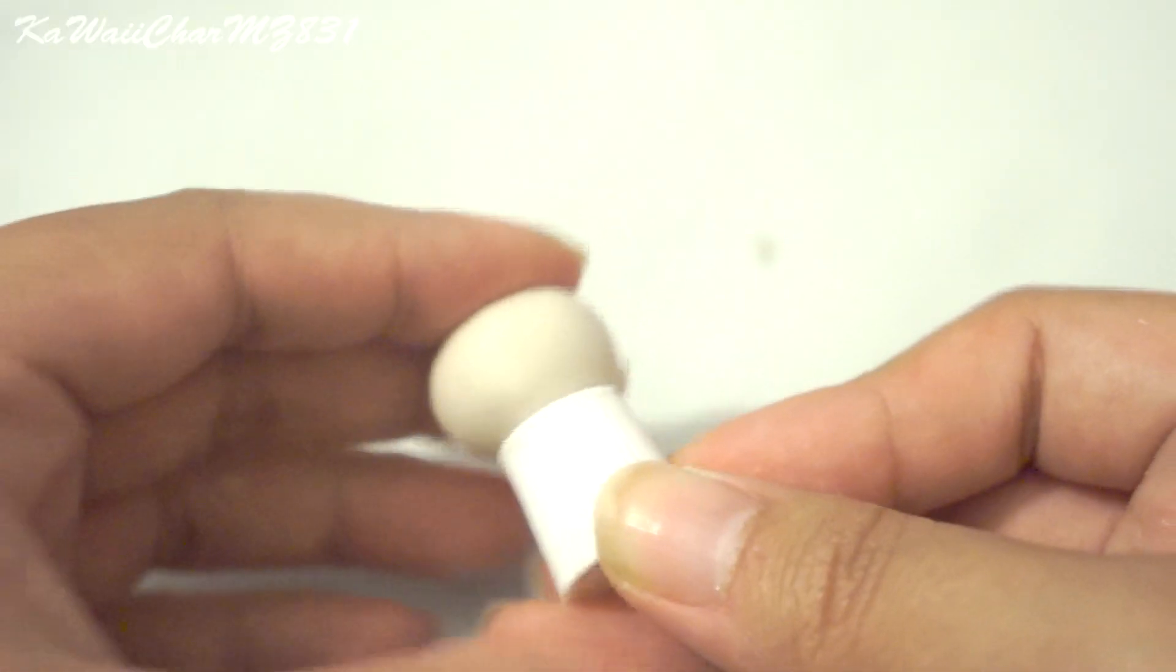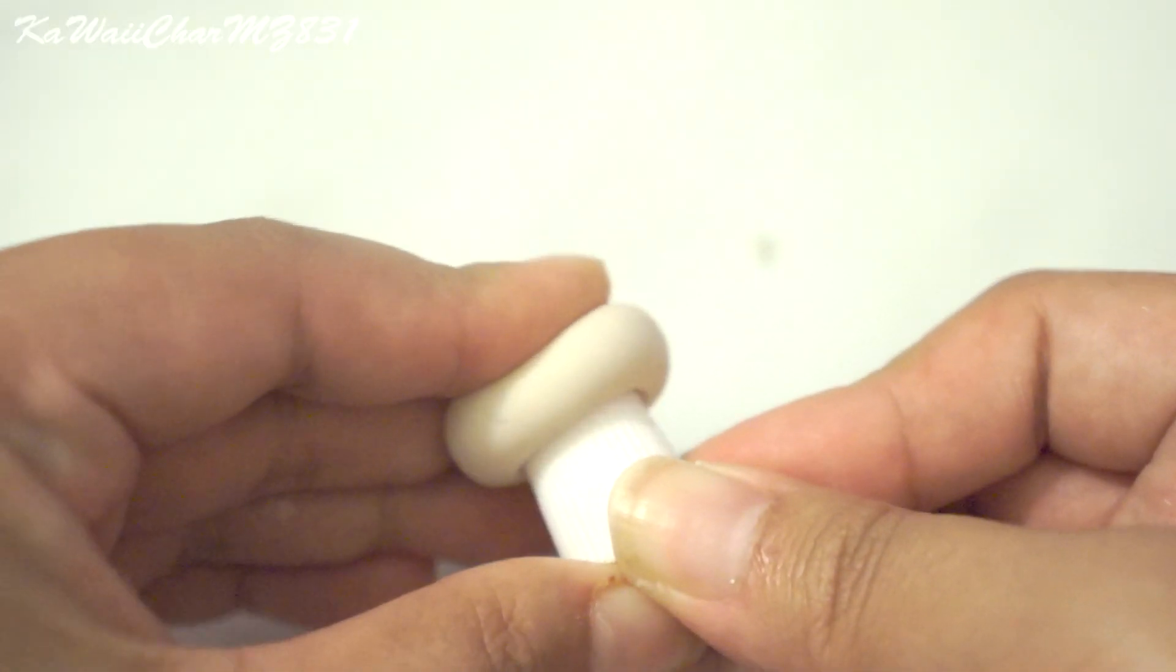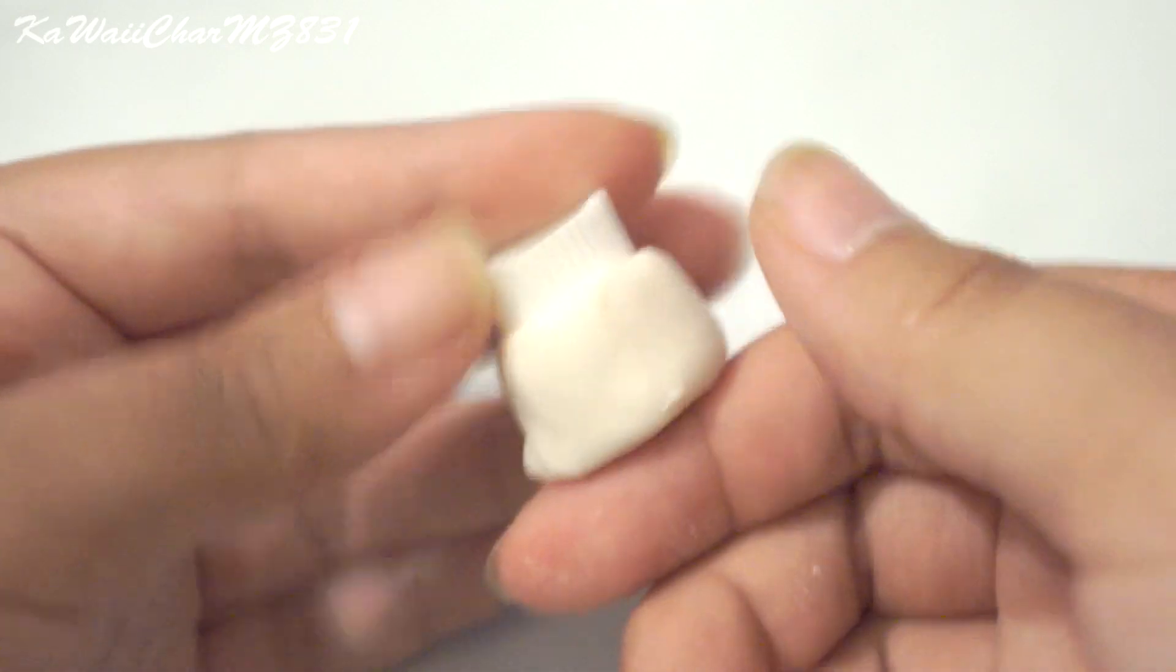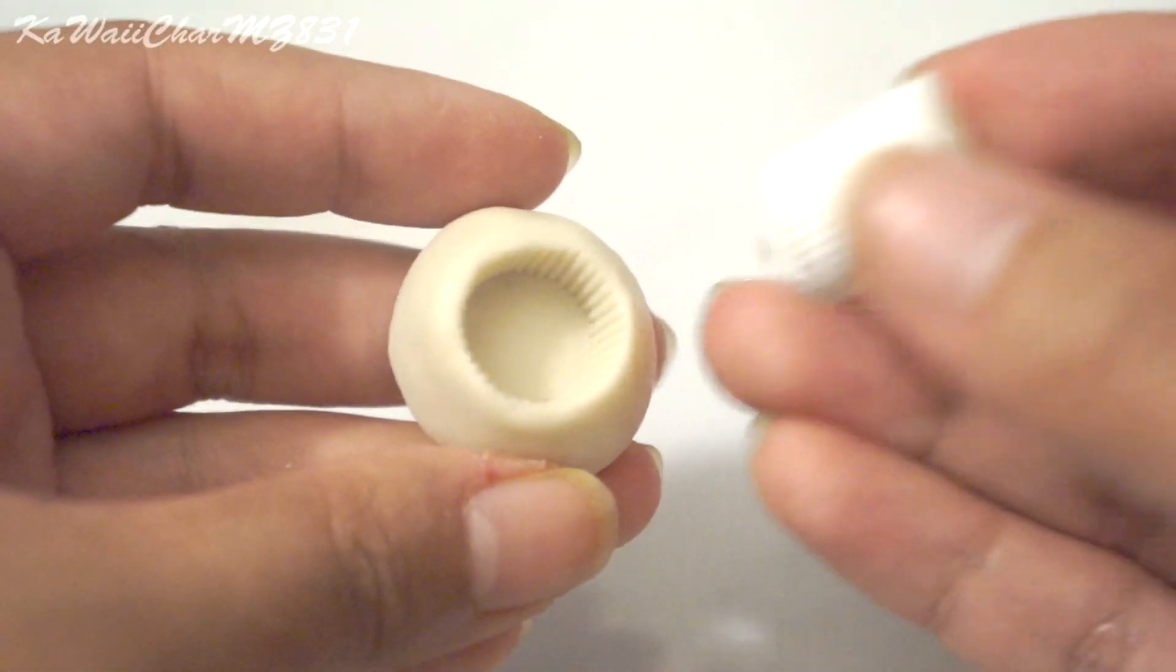Next, you're gonna go ahead and form the mold maker around the toothpaste cap, and you just go ahead and pull it out. And there's one way to make your cupcake base.